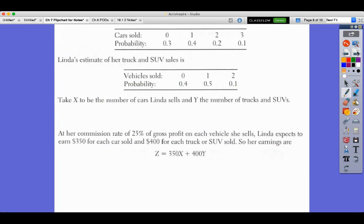Now, let's look at something that might be independent. A lot of times it'll say, let's assume that they're independent. So, Linda's truck sales, those are the car sales that we talked about earlier. This is how she sells trucks. Take x to be the number of cars, y to be the number of trucks.